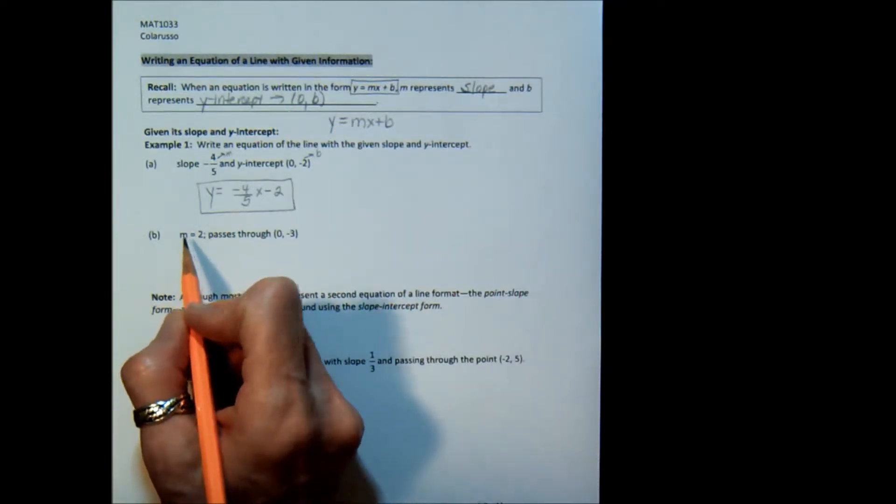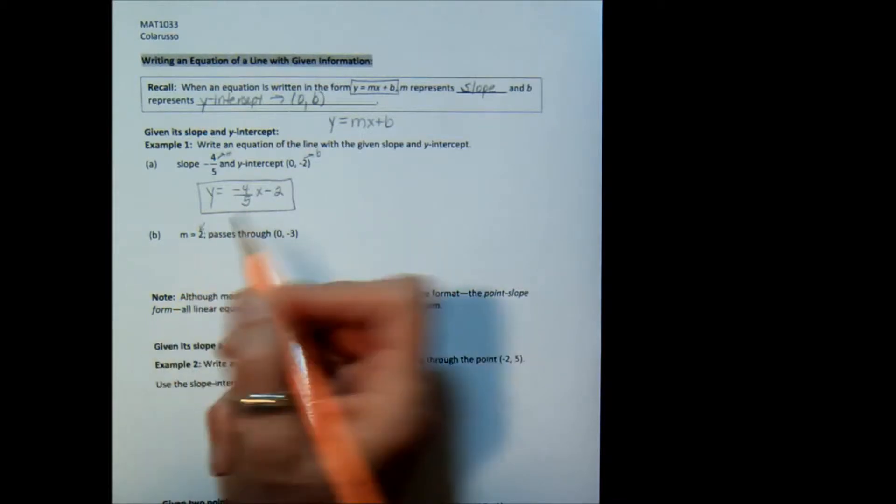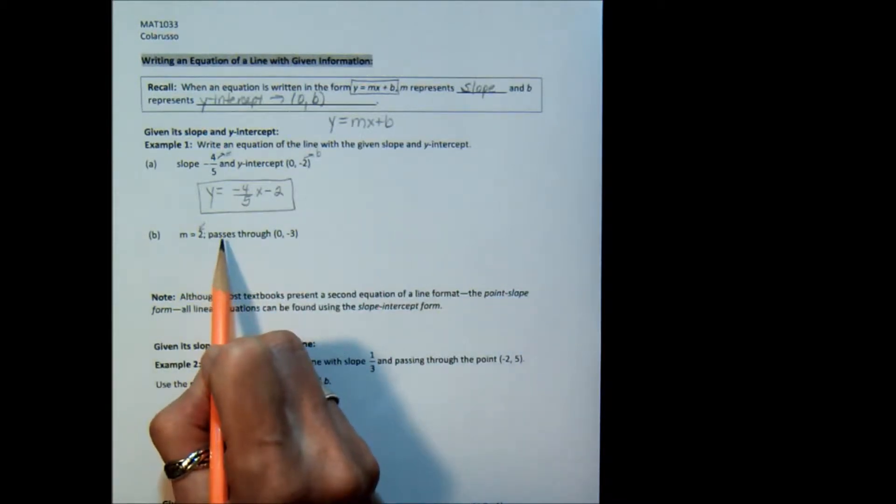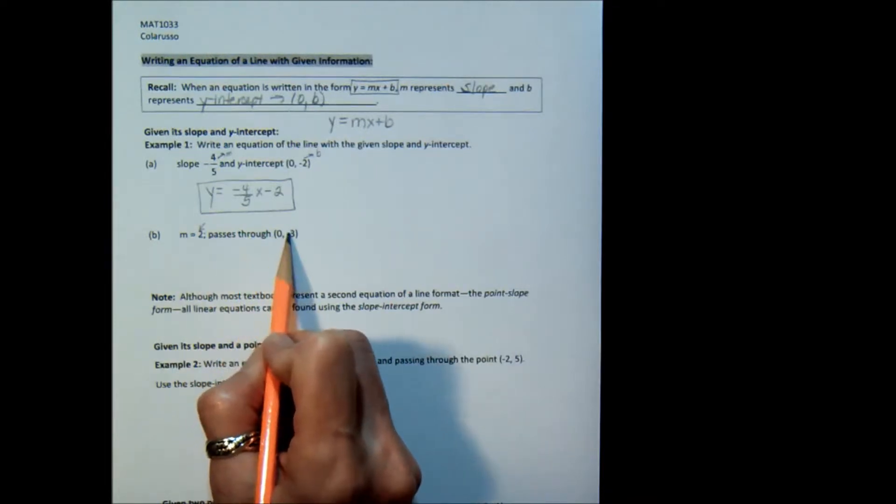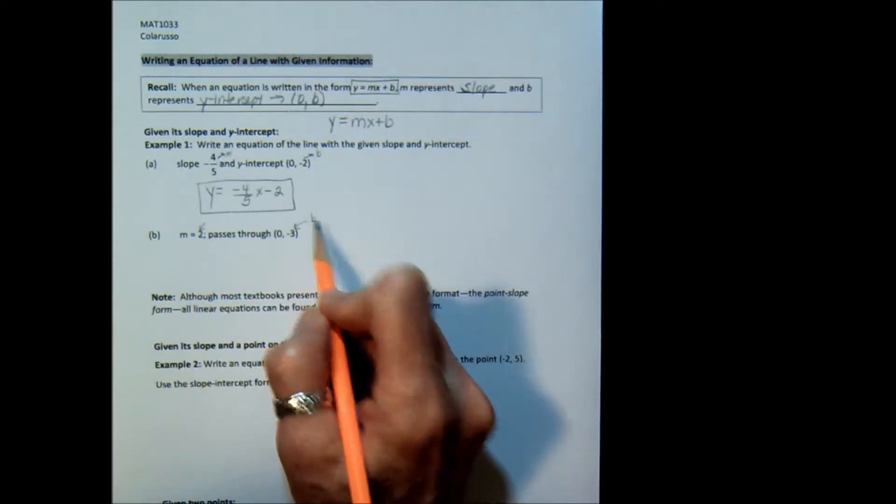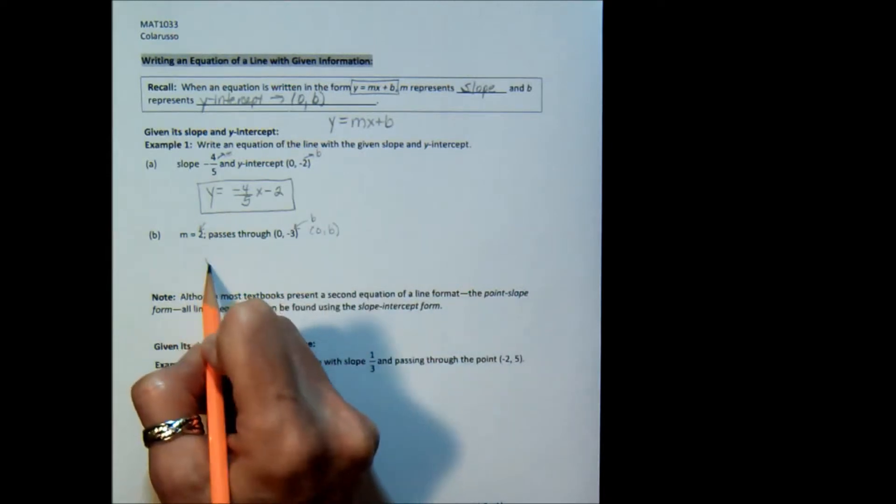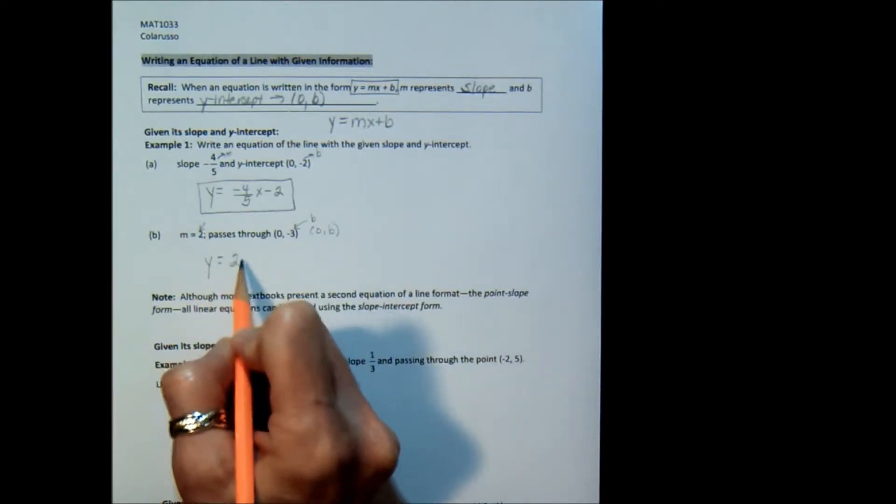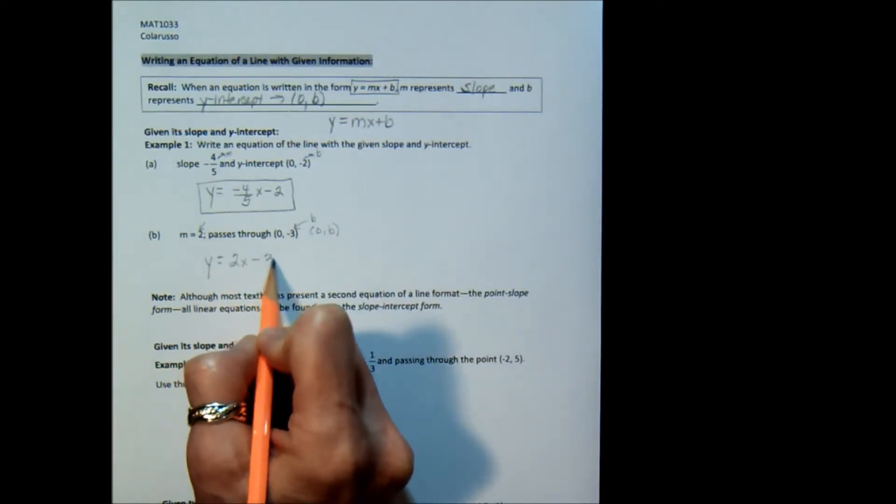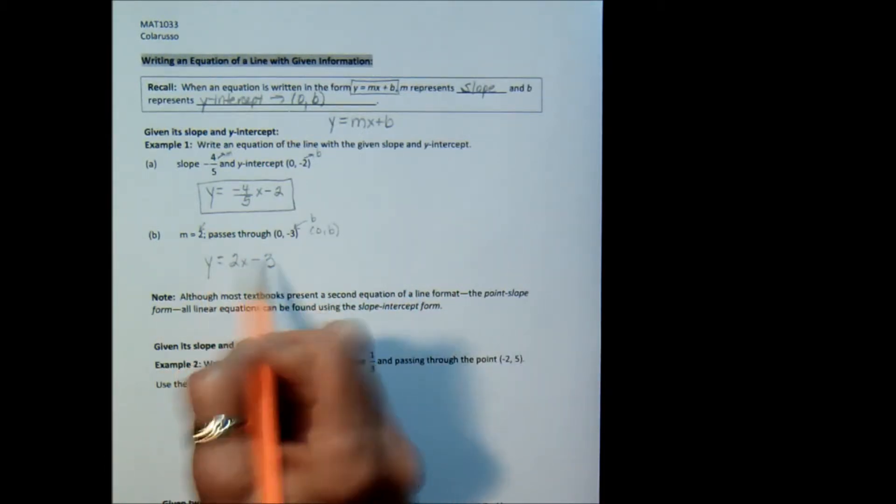Part b, same thing. I have m equals 2. So I have the m right there. And then in a different way, it tells me the y-intercept because it says it passes through the point 0, negative 3. Well, because of the 0 in the x spot, I know that this is the b part of the y-intercept. So again, I just plug it in. y equals 2x minus 3. Or y equals mx plus b. And I have my equation.